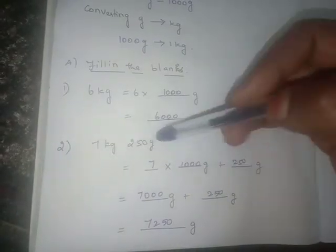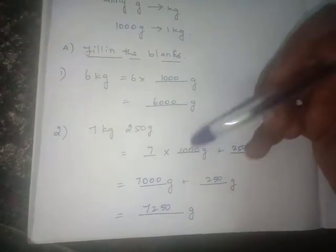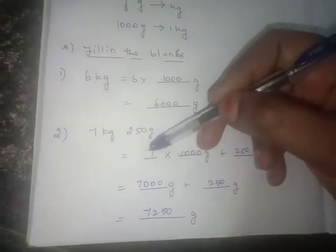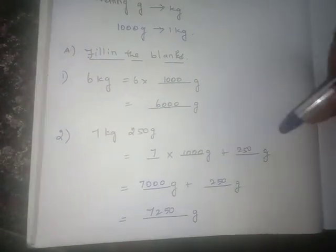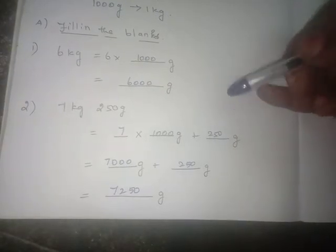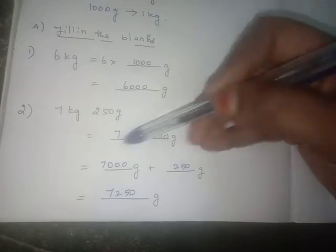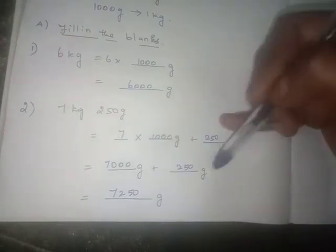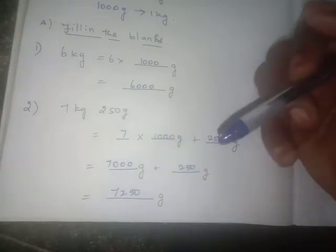So when kilogram and gram are both present, first split them: kilogram on one side, gram on the other. The kilogram is converted to gram by multiplying the number seven by one thousand. The gram part, two hundred fifty grams, remains unchanged. Then seven thousand is added to two hundred fifty grams to give seven thousand two hundred fifty grams.